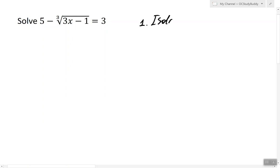In step 1, we isolate a radical expression. We want to write our equation in the form where we have an nth radical of some expression equals some number.